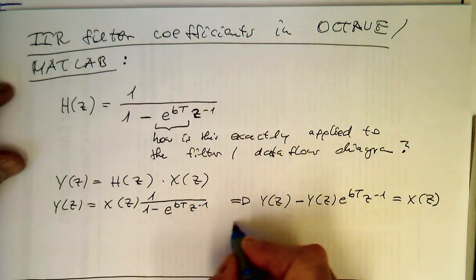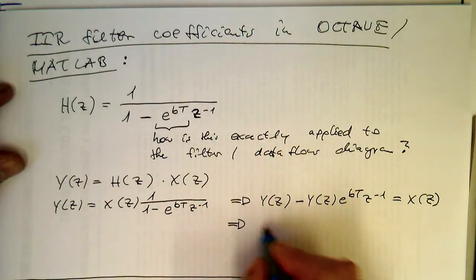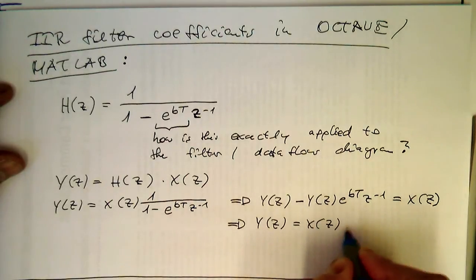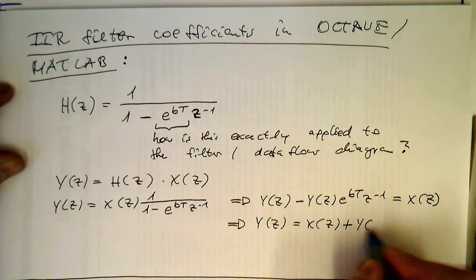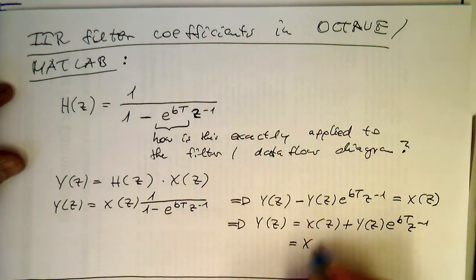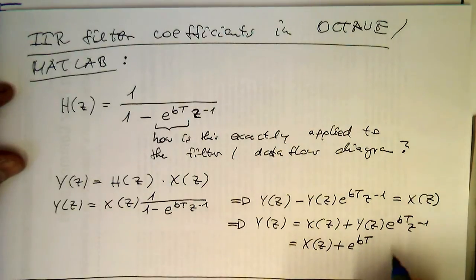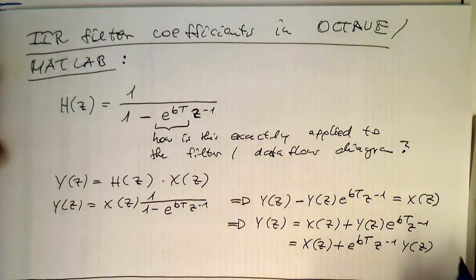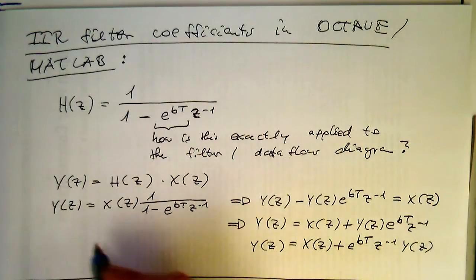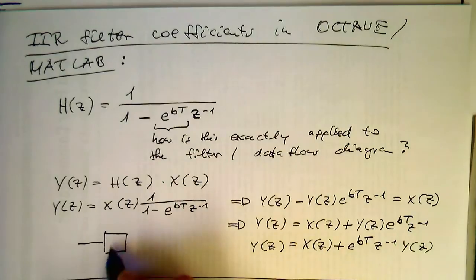So this was, and then what we need to do is the next step here. So we need to have the Y of Z is then equals X of Z plus Y of Z E to B T, Z minus 1. So now I just rewrite this here a bit so that we have X of Z plus E to B T and then Z to minus 1 and then Y of Z. So we know that, so this gives us our recursive filter. So that's our T, that's our delay.